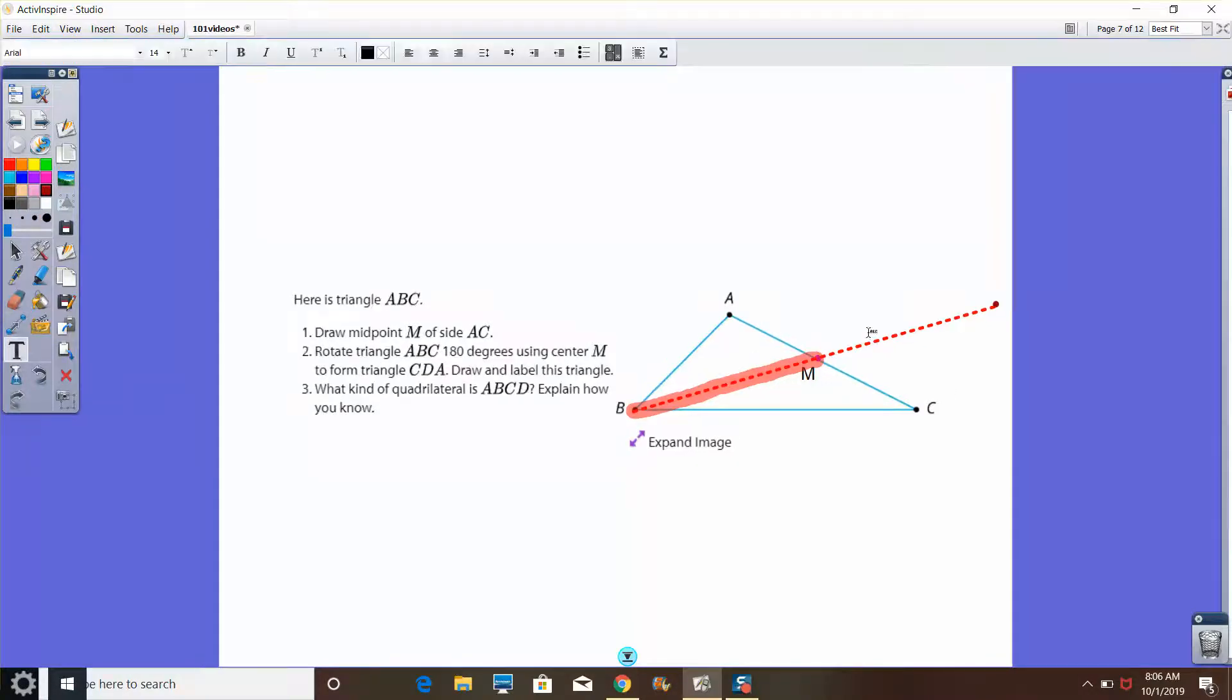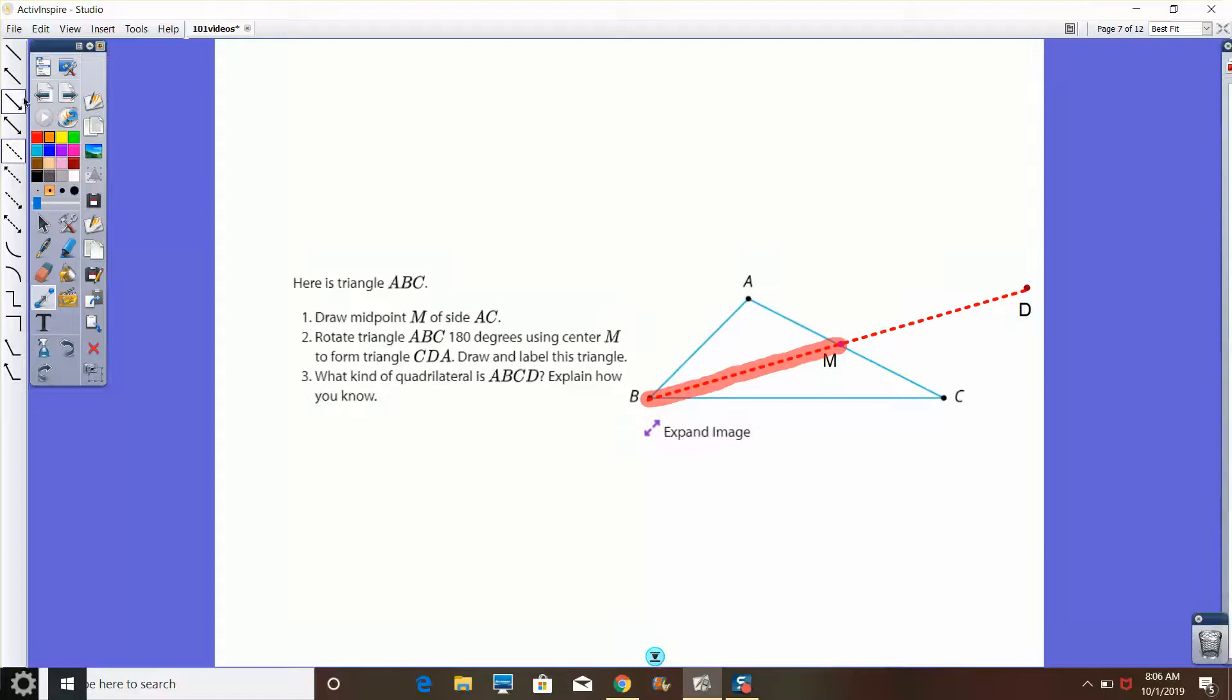Remember that when I rotate a point along some center of rotation, this segment is going to flip all the way around using 180 degrees, and the distance of this point that I end up with is going to be exactly the same as the distance of the original point to the center of rotation. So that point D is going to be right about here. That's our new point. Since I'm doing this to the entire triangle, I want to sketch these lines in as well. Here's point C, and here's point A.